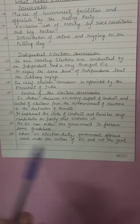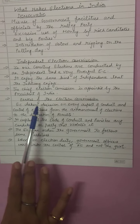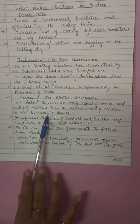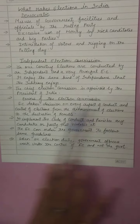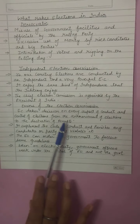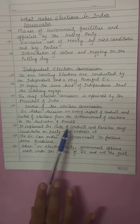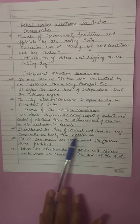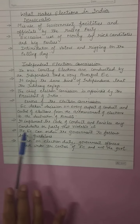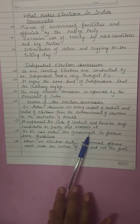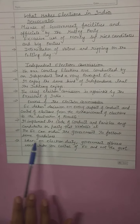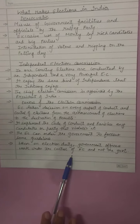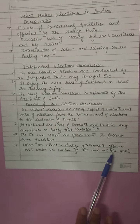What are the powers of the election commission? The election commission takes decisions on every aspect of conduct and control of elections — from the announcement of elections to the declaration of results. It implements the code of conduct and punishes any candidate or party that violates it. The election commission can order the government to follow some guidelines, and when on election duty, government officers work under the control of the election commission, not the government.